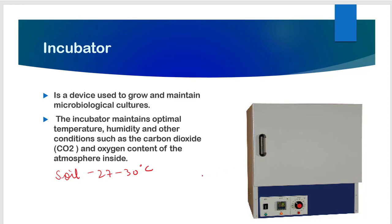The incubator allows precise temperature control rather than relying on room temperature. If the room temperature is 10 degrees Celsius, an organism may not grow or will take more days to grow at that temperature. Every organism has a certain temperature requirement to grow. For instance, if a microorganism isolated from the human body likes to grow at 37 degrees Celsius, we change the temperature settings of the incubator accordingly.